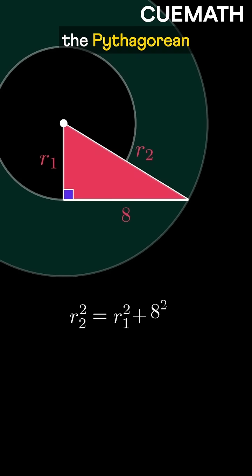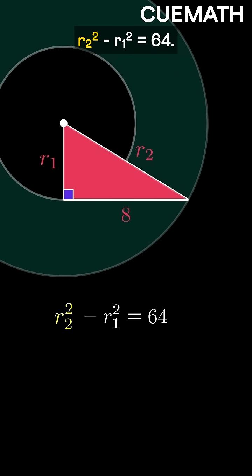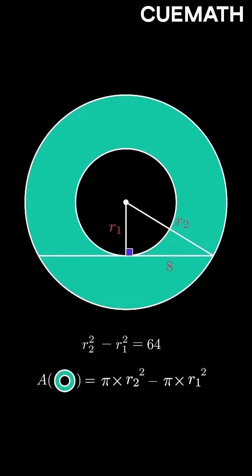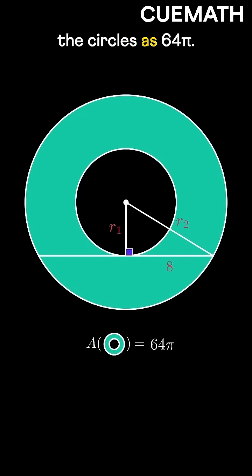Applying the Pythagorean theorem, we get R2 squared minus R1 squared equals 64. Multiplying both sides by pi, we get the area between the circles as 64 pi.